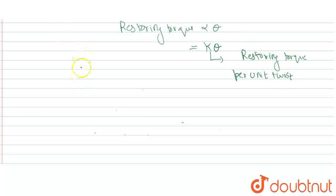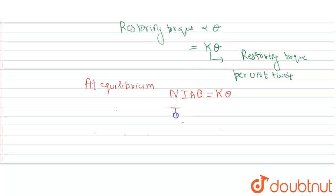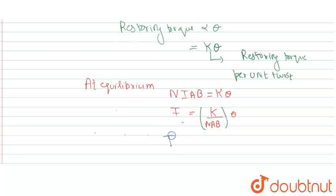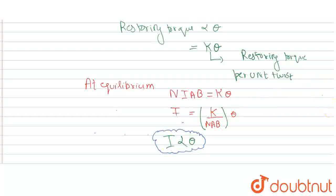At equilibrium, both torques must be equal, so N·I·A·B equals k·θ. Therefore, current I equals (k / N·A·B) × θ. Since all terms in the bracket are constant, current I is directly proportional to theta. This is the basic working principle - the device measures very small values of current that cannot be measured by an ordinary ammeter, as current depends on the deflection angle theta.